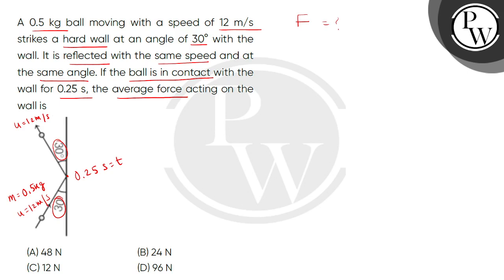First of all, we take initial momentum. Let this be mu. And this angle given is 30 degrees. Now, when we break this initial momentum into two components, this angle is 30 degrees, and this horizontal component is mu sin 30 degrees.